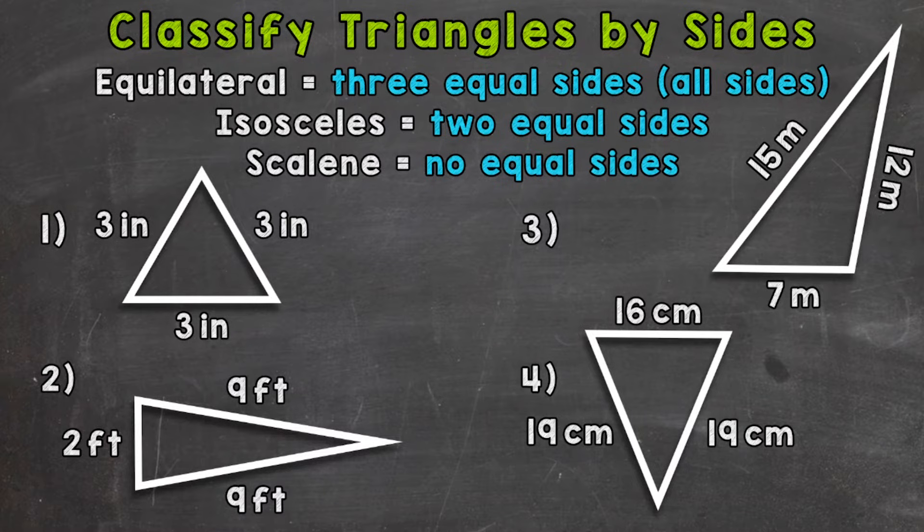Now we have three options as far as types of triangles based on sides. First, we have equilateral triangles. That means all three sides are equal.